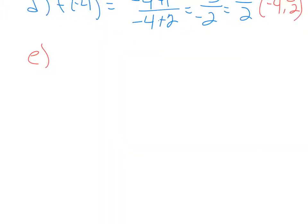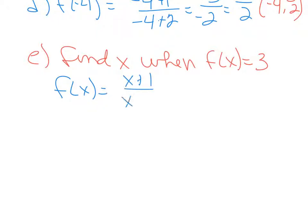Now part e of this question asks us to find x when f(x) equals 3. I'm going to rewrite the function here. The function is f(x) equals (x+1) over (x+2). Now this is a little bit different. It's asking us to find x when f(x) equals 3, that means that they are not telling us x, so we are not substituting for x here.